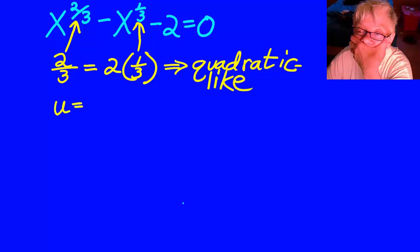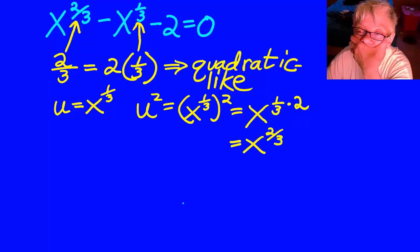So let u equal x to the 1 third power. Then u squared will equal x to the 1 third power squared. And remember your laws of exponents. When you have a base raised to a power raised to a power again, you multiply the powers. So u squared equals x to the 2 thirds power.